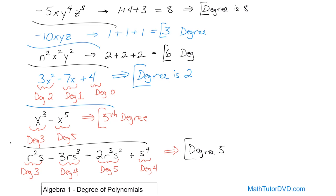There's really no point in doing more problems because they're all done the same way: just look at each term, find the degree of each term by simple addition, and figure out which is the largest. Most polynomials in real life that you study are going to be 2nd, 3rd, maybe 4th degree. Make sure you understand this concept — we're going to be talking about polynomials pretty much from here on out to the end of this class, so follow along to the next lesson.